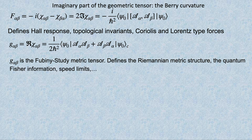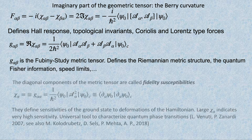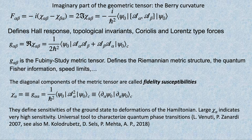There is also the real part of this tensor, which has been studied much less until recently. The real part is called the Fubini-Study metric tensor—it defines a metric structure, basically a distance structure, and also defines quantum Fisher information. It defines speed limits and appears in many other contexts. Diagonal components of this metric tensor, for a single parameter lambda, are called fidelity susceptibilities. This name makes sense because the overlap of wave functions is fidelity, and this is a susceptibility.